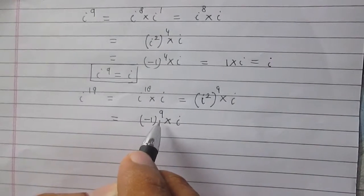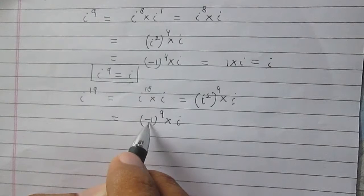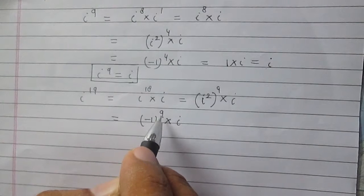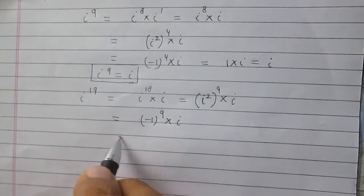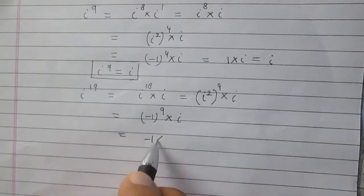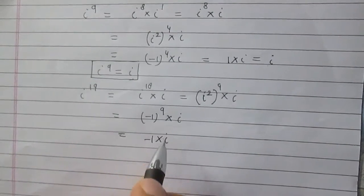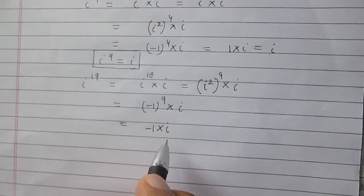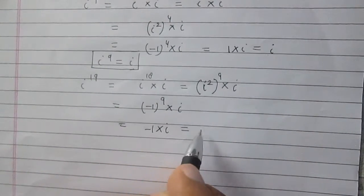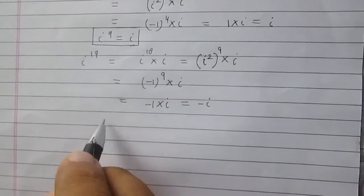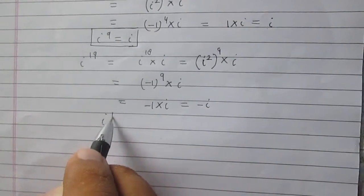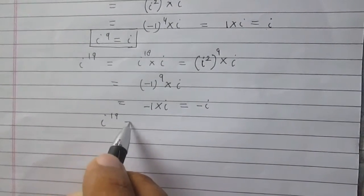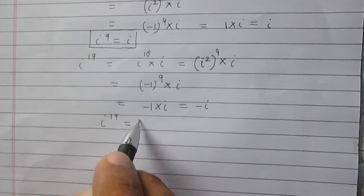9 is an odd number, so minus 1 raised to an odd power is minus 1. So minus 1 in multiplication with iota, and finally we get minus iota. So iota raised to power 19 is minus iota.